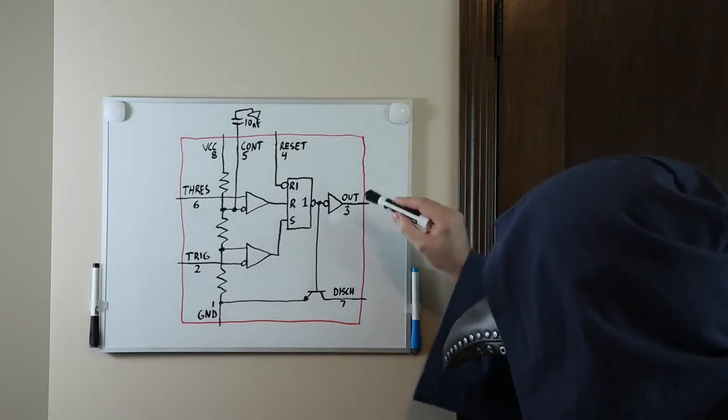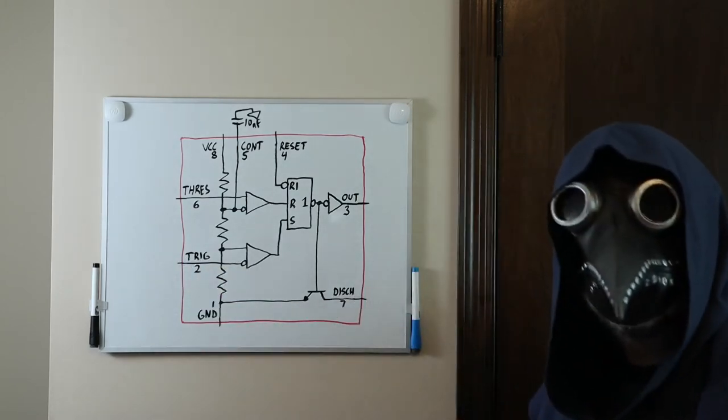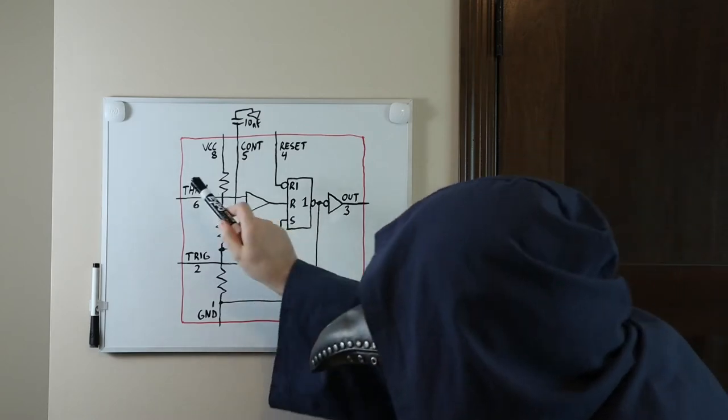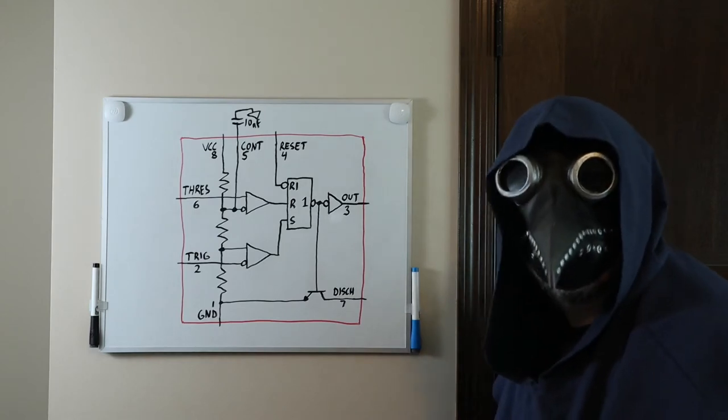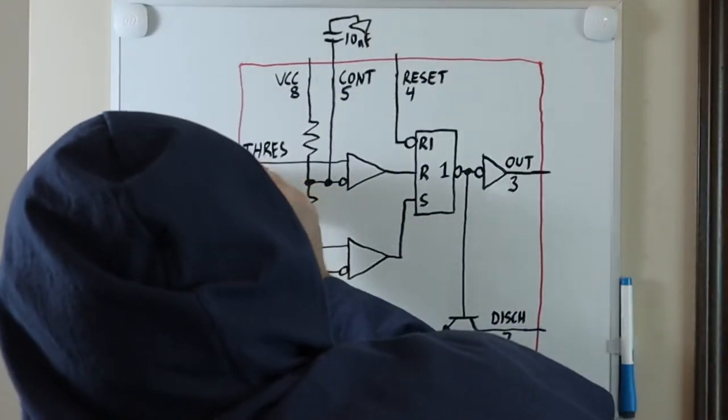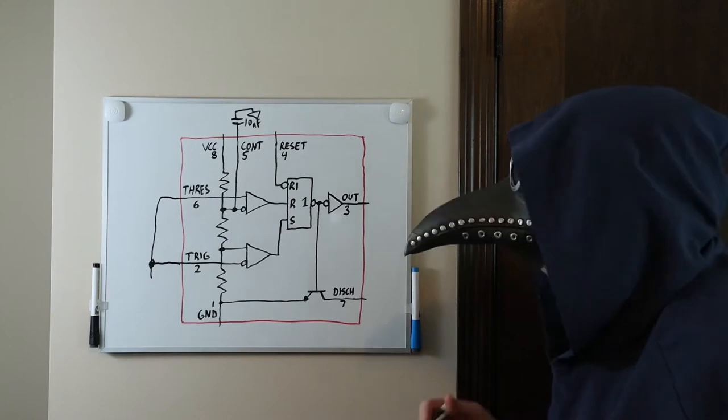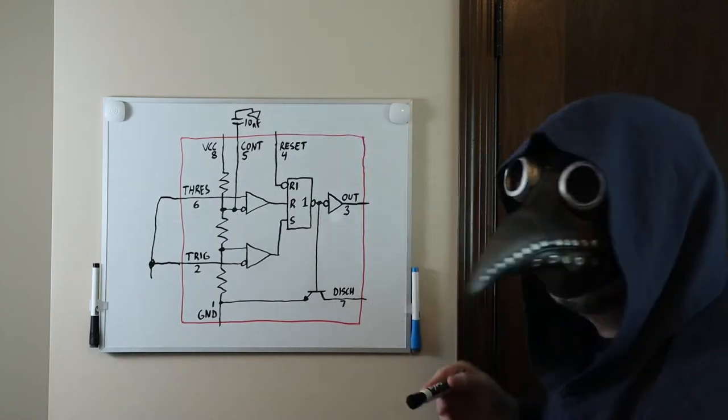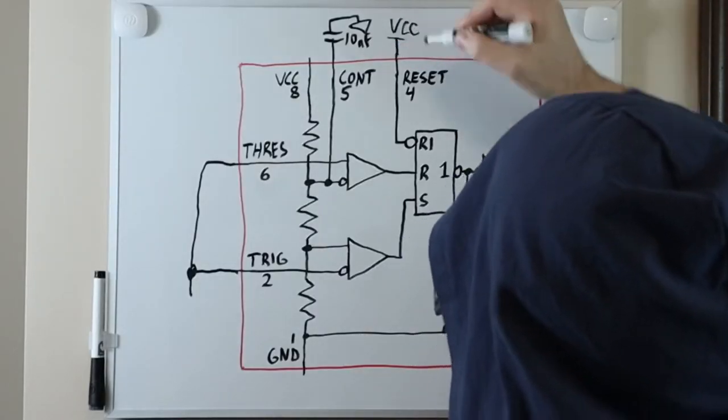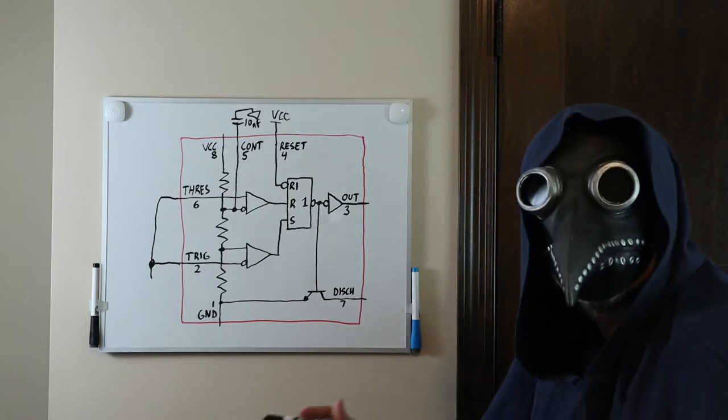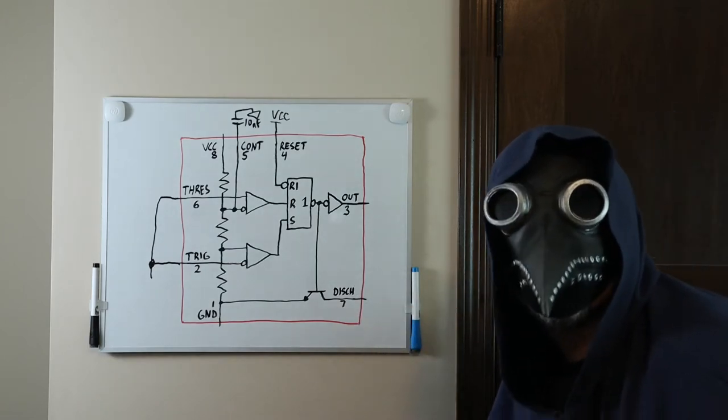And, the output of this upper comparator goes high whenever the voltage on the threshold pin is higher than two-thirds VCC. Again, assuming no overriding voltage from the control pin. We will make this assumption from this point on, so I'll bypass the control pin to ground through a 10 nanofarad capacitor. So, basically, the output pin goes high whenever we supply a voltage lower than one-third VCC to the trigger pin, and goes low whenever we supply a voltage greater than two-thirds VCC to the threshold pin. By the way, in Astable mode, we generally connect the trigger and threshold pins together for a single input. We also have a reset pin here that allows us to reset the device if we bring the reset pin low. Generally, we will just tie it to VCC to avoid any resets, but you can use it if you want to. We have one more pin here, the discharge pin, and we'll talk about that one later.